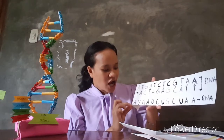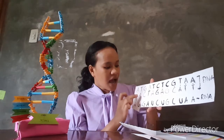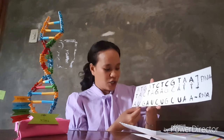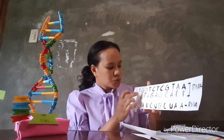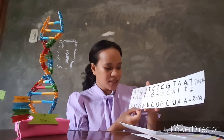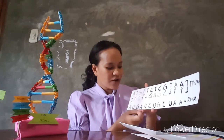Adenine and thymine — in RNA we have adenine. In RNA, the thymine would be uracil. Guanine and cytosine — we have guanine. Adenine and thymine — we have adenine, and so forth. We go through translation.